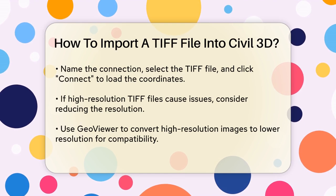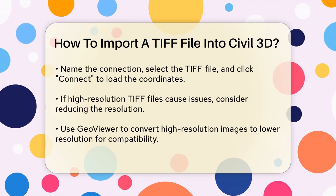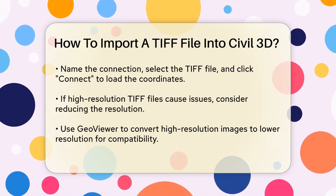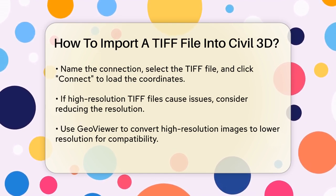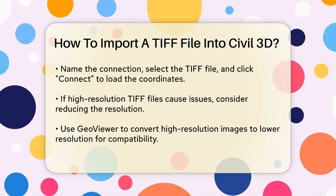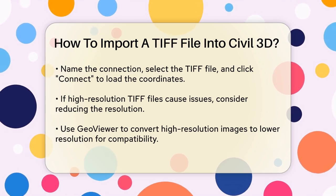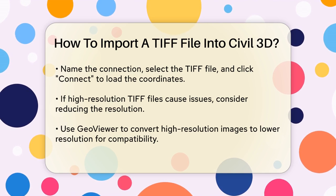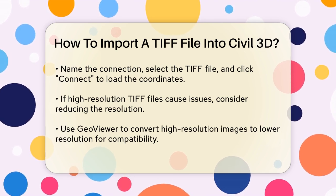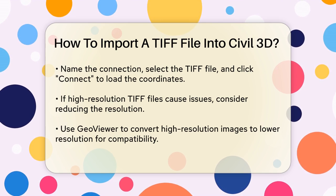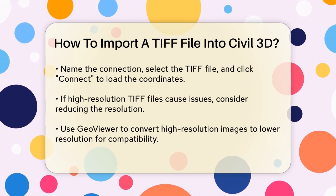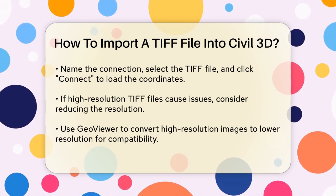Another way to import the TIFF file is through the Add Raster Image or Surface Connection option. Go to the Planning and Analysis tab, click on Connect in the Home folder, and then select Add Raster Image or Surface Connection. Give the connection a name, choose the TIFF file, and click the Connect button. Finally, click Add to Map to load the coordinates from the TIFF file.